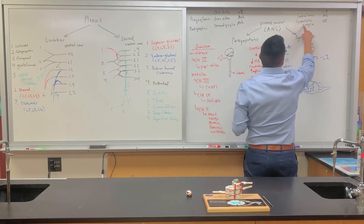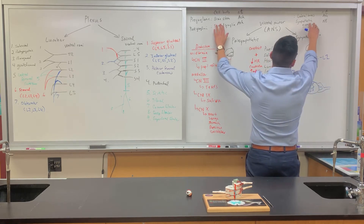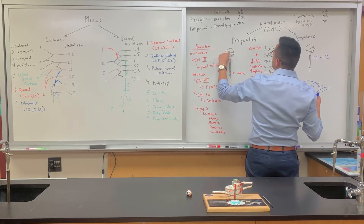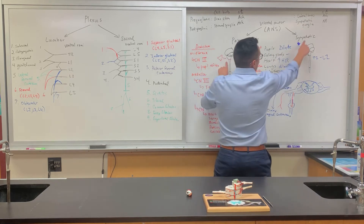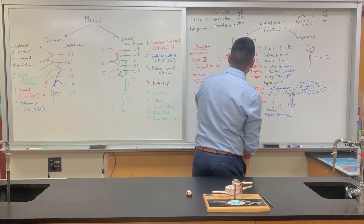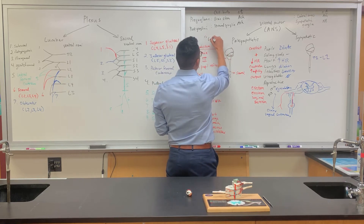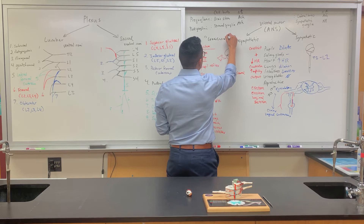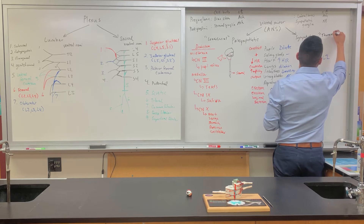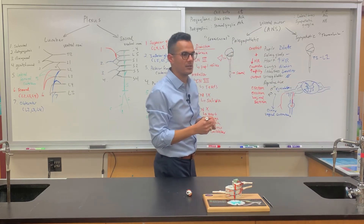For the sympathetic, the cell body of the preganglionic neuron is found within the lateral horns of the spinal cord, and the postganglionic cell body is found within the sympathetic ganglia. The brain stem is within the cranial region, while the lateral horns are within the spinal cord. This is why the parasympathetic is also called the craniosacral division, and the sympathetic is called the thoracolumbar division, based on the regions where the neurons are located.